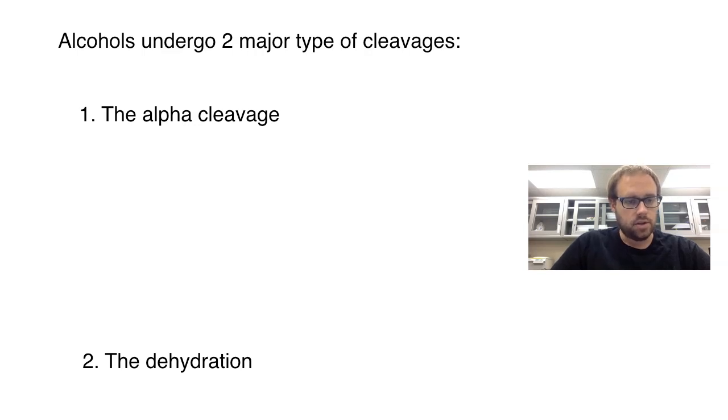So for the alpha cleavage, you're going to have a general type of alcohol, and then you're going to deal with the beta and the alpha carbon here in relation to the alcohol. The alpha cleavage is going to be a cleavage that occurs right here, in between the alpha and the beta carbon. And what that's going to fragment is this little chunk right here, and then you would have the rest of the molecule.